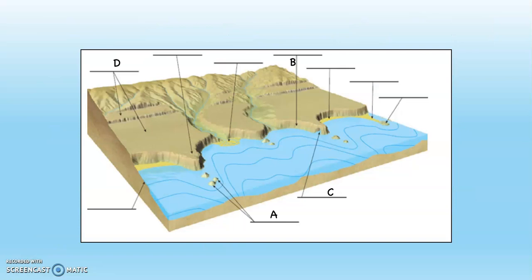Take a look at this diagram, which you may very well see again. A is indicating sea stacks. B is a sea cliff. What do you think C is? Sea arch — very good. Notice that this is where wave refraction is going to occur; you'll see that in another video. And then D, this step-like thing coming up out of the water, those are marine terraces.